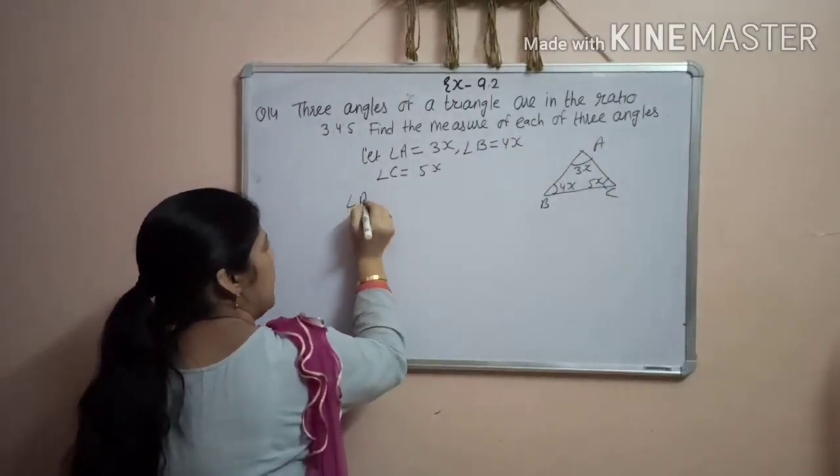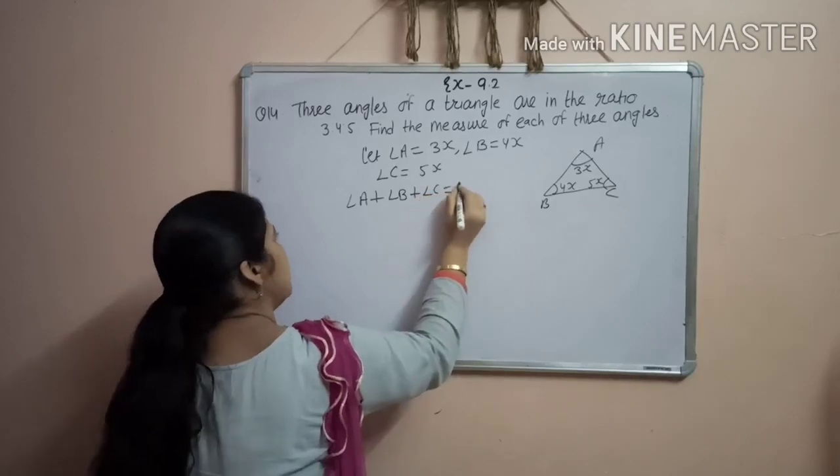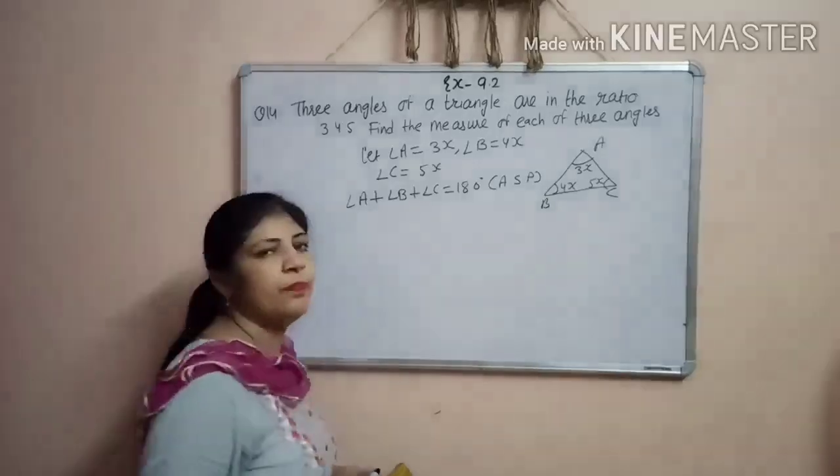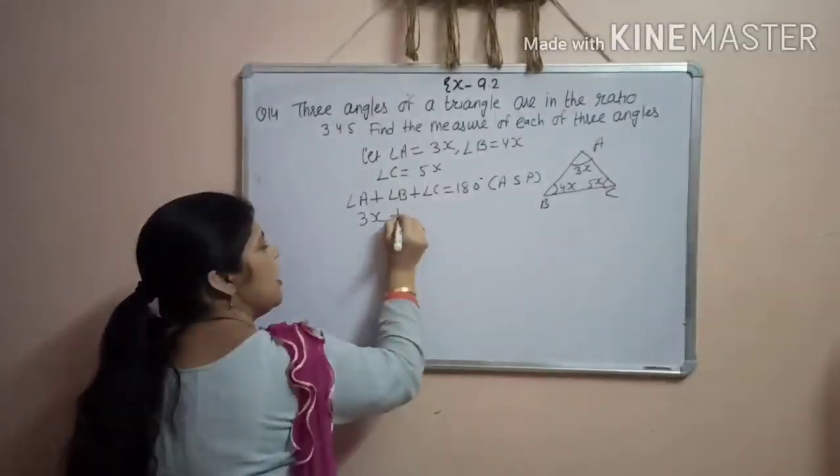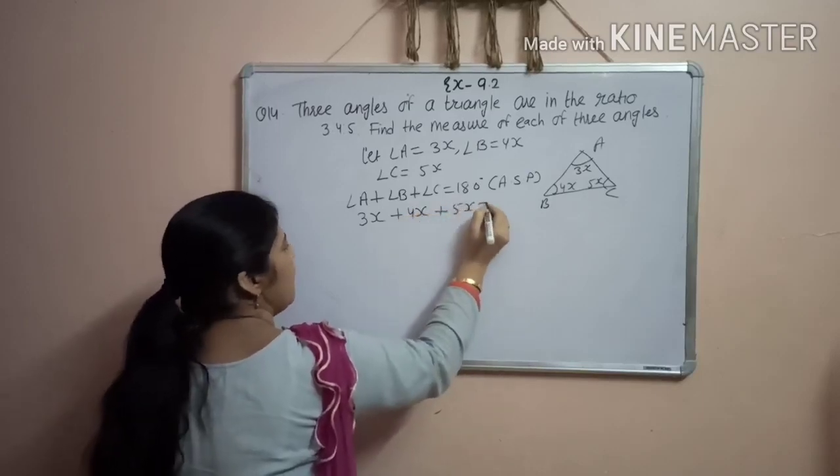So, angle A plus angle B plus angle C is 180 degree by angle sum property. Now, angle A is 3x, angle B is 4x, angle C is 5x.